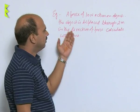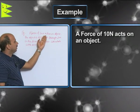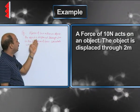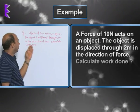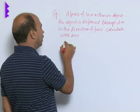See in this question, very simple one. A force of 10 Newton acts on an object, the object is displaced through 2 meters in the direction of force. Calculate the work done.